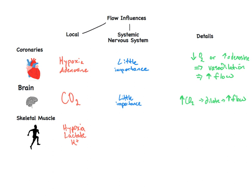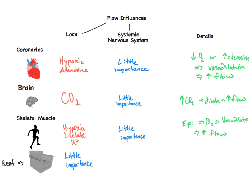The epinephrine circulates and binds to beta-2 receptors to produce vasodilation. However, we see the nervous system kick in and regulate its flow during non-exercising times. We lose the circulating epinephrine and its beta-2 effect, which decreases the blood flow to the muscle tissues.